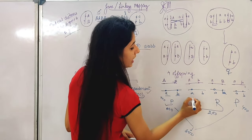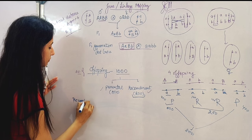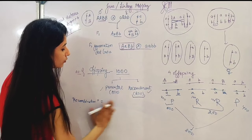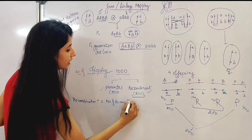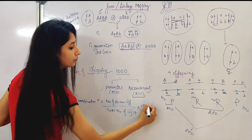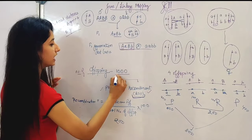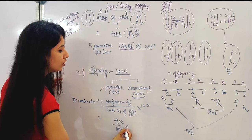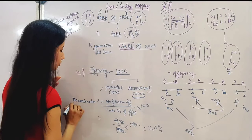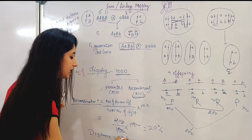Applying the formula: recombination frequency equals number of recombinant offspring divided by total number of offspring, multiplied by 100. Number of recombinant offspring is 200, total is 1000. So recombination frequency equals 200/1000 × 100 = 20%. Therefore the distance is 20 centimorgan.